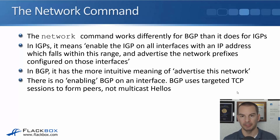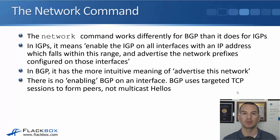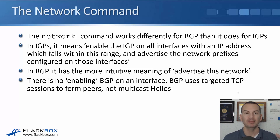The network command works differently for BGP than it does for IGPs. In IGPs it means enable the IGP — OSPF, EIGRP, whatever — on all interfaces with an IP address that falls within this range, and advertise the network prefixes configured on those interfaces. We covered that in depth when we covered RIP, EIGRP, and OSPF. It's really important to understand how the network statement works for IGPs.